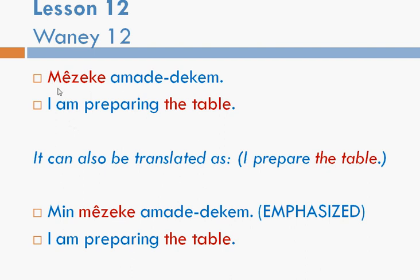Look at the beginning: Mizaka amada dakam. Mizaka amada dakam — I am preparing the table. You see, you start with the table: the table, I am preparing. Mizaka amada dakam. I prepare the table or I am preparing the table — it is almost the same in Kurdish. You can add wa, as we talked about in the previous lesson, which shows continuous action. But this form can also work for continuous action.